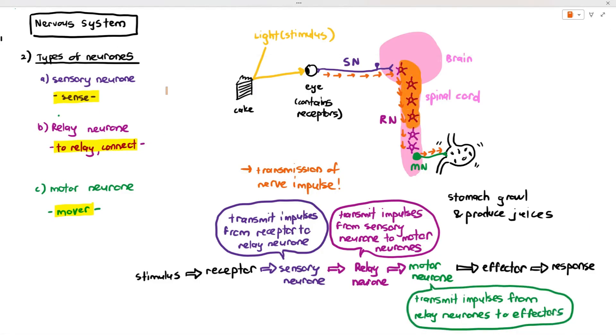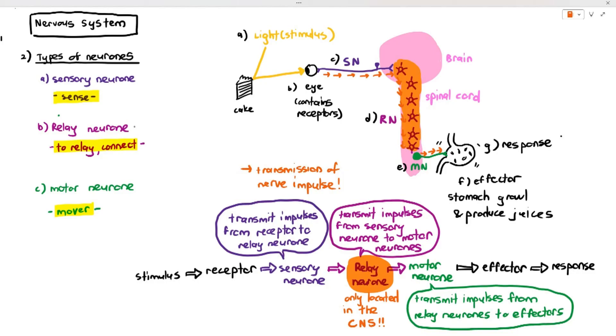You must understand something very important here. The relay neurons are always only found in the central nervous system, which means to say they are only found within the brain and the spinal cord. They are not found in any other parts of the body. You cannot find it in your hand, your toes, your shoulders, your head, knees, whatever. The relay neuron is only specifically found in the central nervous system or the CNS.